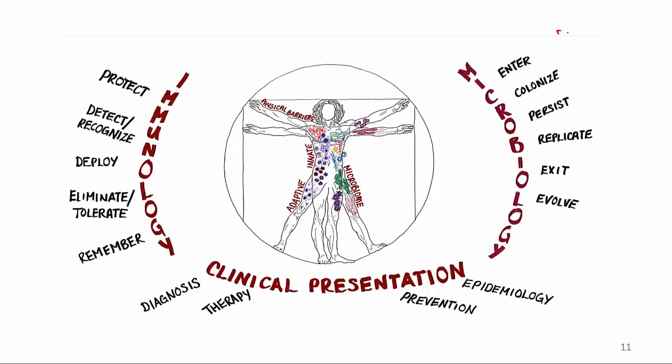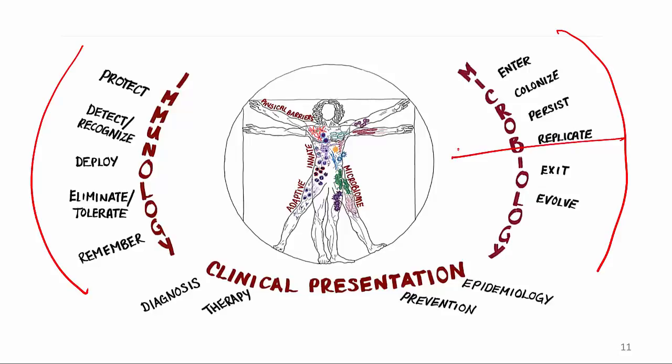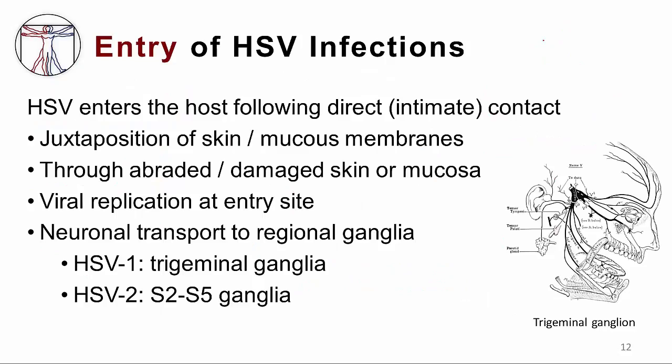Remembering our map that depicts microbiology, immunology, and the interface that results in the patient experiencing clinical disease, I'd like to reference how the herpes virus enters the cell. It does this by direct intimate contact, by the juxtaposition of skin and mucous membranes between two humans, often facilitated because the skin might be slightly abraded or damaged. Once the virus enters the skin or mucosa, it replicates at the entry site and then is transported up the neurons to regional ganglia.